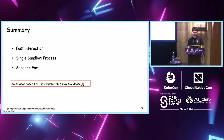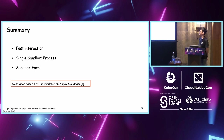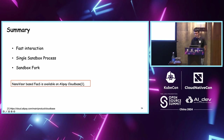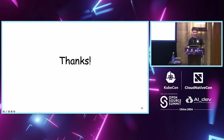Here is a summary. We have done three works to make it fast: first, fast interaction; second, single sandbox process; and third, sandbox fork. NanoVisor-based FaaS is now available on Alipay Cloud Base, which is a FaaS production product provided by Ant Group. You can access the URL below to view the details. That's all for my talk, thank you very much. Free for questions.